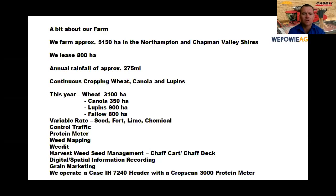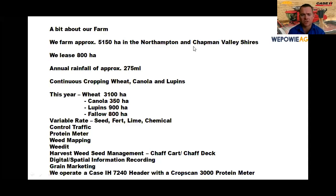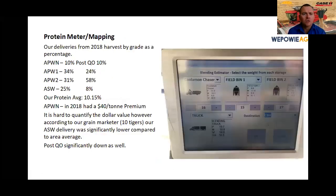We've really taken the precision ag road. We variable rate seed, fertilizer, lime, and chemical. We're on a 13.6-meter control traffic system. We weed map at harvest using a WeedIt. We have harvest weed seed management, and all our information is digitally and spatially recorded by all the machines — all of which feeds into our grain marketing. For the grain analyzer, we operate a Case IH 7240 header with a CropScan 3000 protein meter.